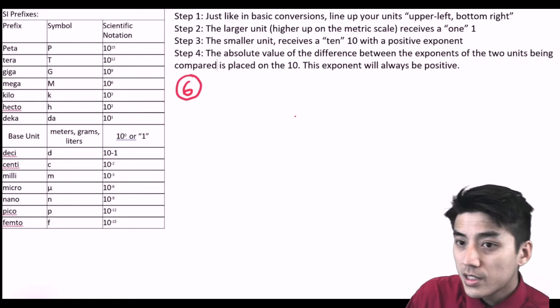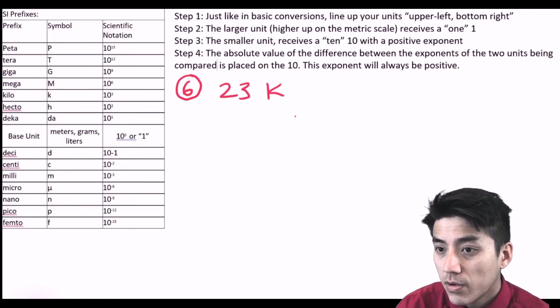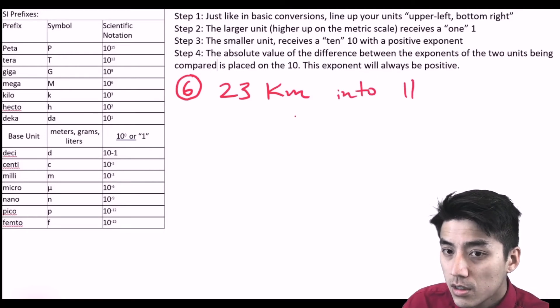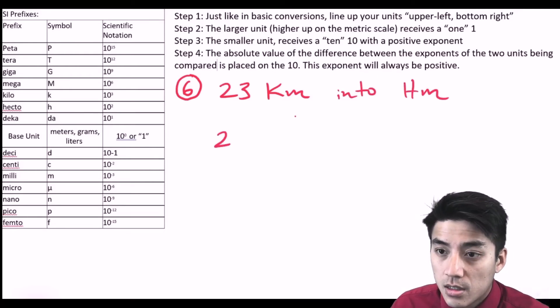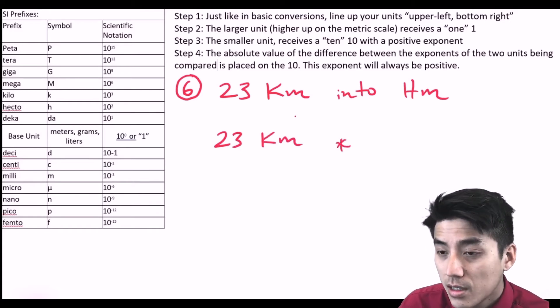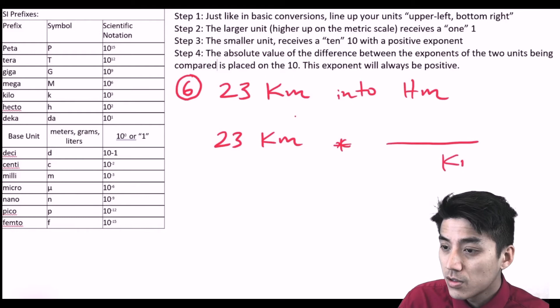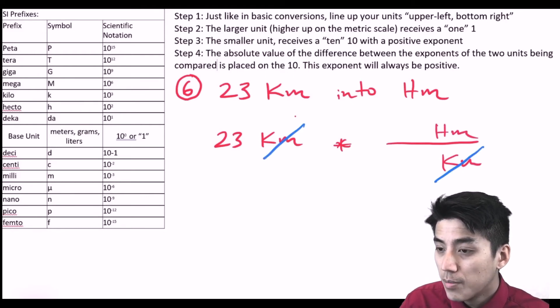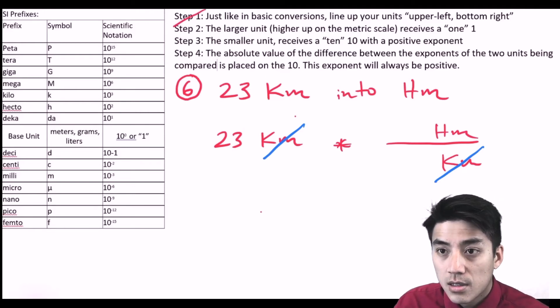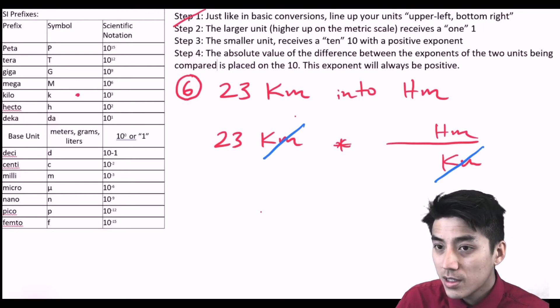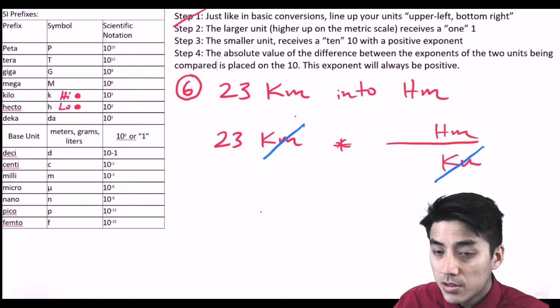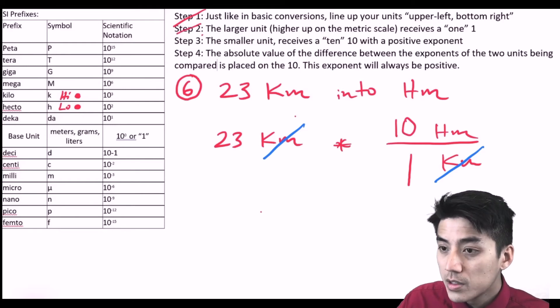Let's see what they want in problem six. We're going to change 23 kilometers into hectometers. Let's go through the four steps. I'm going to write down what we have, 23 kilometers, times sign, draw a line. Put kilometers so that they're above and below each other, diagonally like that. Cancel out the units. Step two, let's figure out who gets the one and who gets the ten. I'm going to place a dot there, kilo, and hecto. Because this problem involves just those two units. Kilo is higher, hecto is lower. The one that's higher always gets the one. The one that's lower always receives the ten.